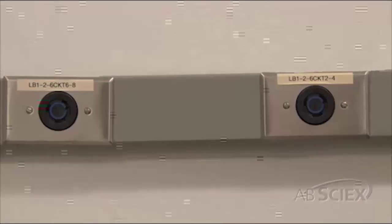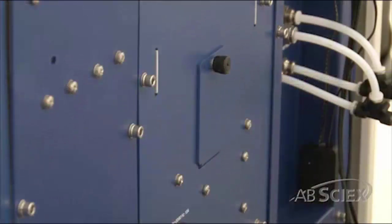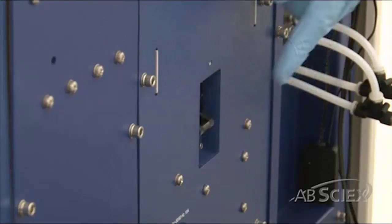Reconnect the mass spectrometer and roughing pump power cords to the power outlets. Remove the cover on the circuit breaker switch on the left side of the mass spectrometer and then turn on the circuit breaker.